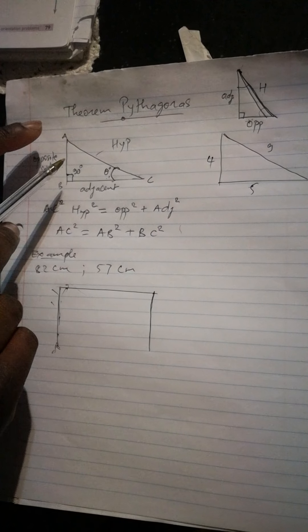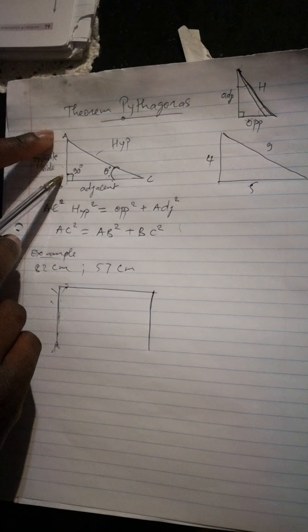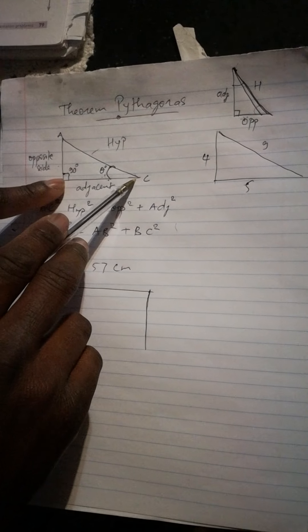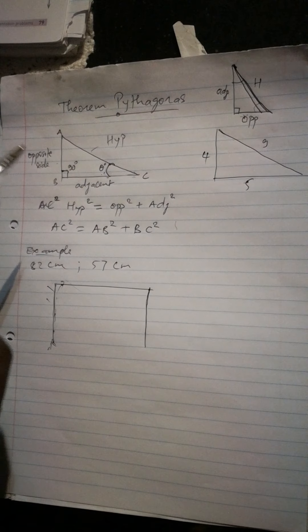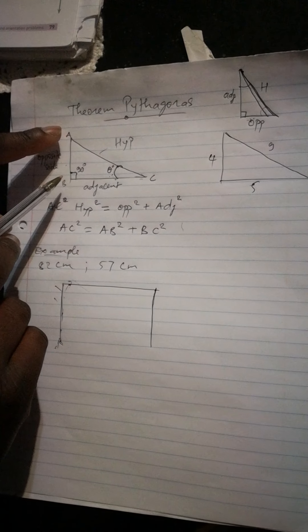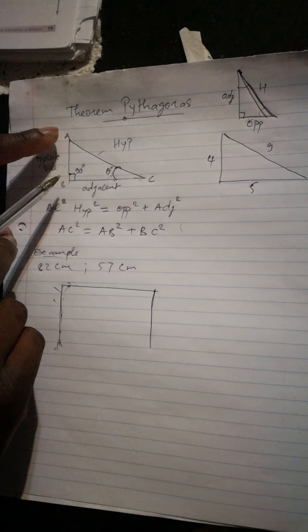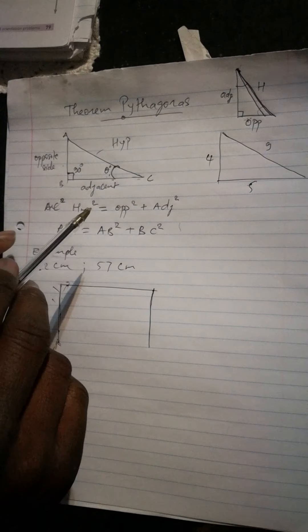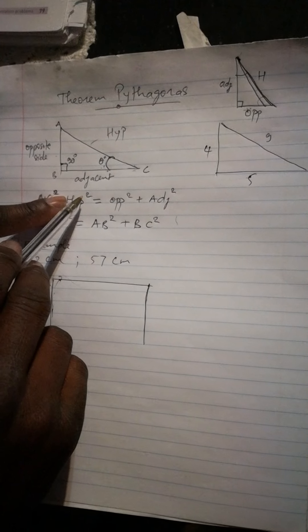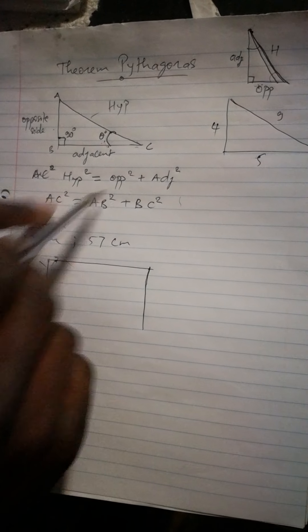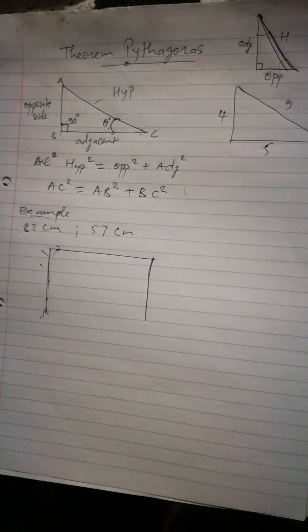Hypotenuse square equal to opposite square plus adjacent square. And you will realize something, the opposite side is always the smaller side than all other sides. So let us say hypotenuse square equal to opposite square plus adjacent square.